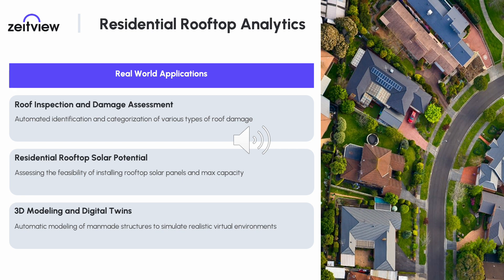Additionally, by understanding the structure and available surface area of a roof, one can assess the feasibility of installing solar panels as well as the power potential. Lastly, the conversion of building structures from imagery to 3D models enables realistic simulations for various applications, such as urban planning and humanitarian assistance and disaster response scenarios.